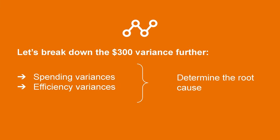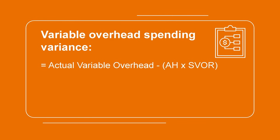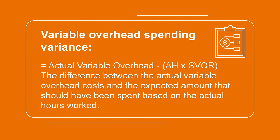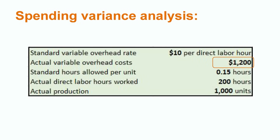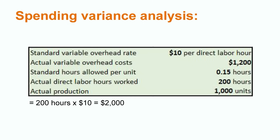Even though this was a favorable variance, the company may want to investigate further to find out the root cause. To do this, we would break down the $300 variance into both spending and efficiency variances. Let's calculate the variable overhead spending variance first. This is done by taking the actual variable overhead less the actual hours multiplied by the standard variable overhead rate. The actual variable overhead is $1,200. We find the difference between this and the actual hours of 200 times the standard variable overhead rate of $10, which equals $2,000. Taking the difference between $1,200 and $2,000, we get $800. Since they spent less than they planned, this would be a favorable spending variance.